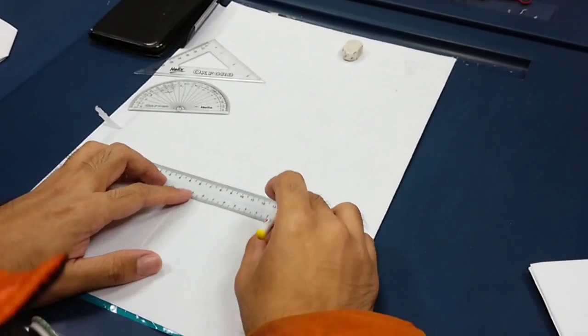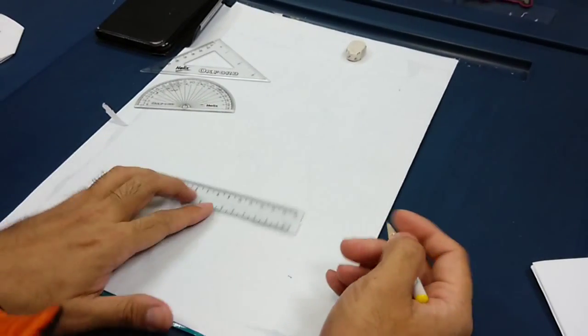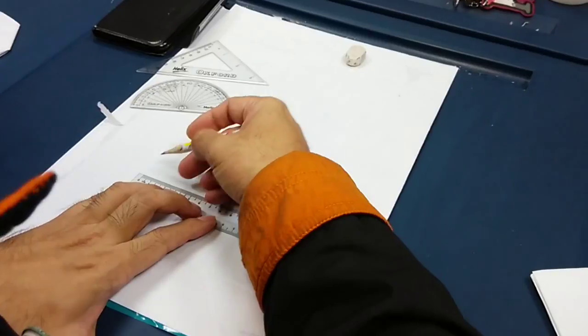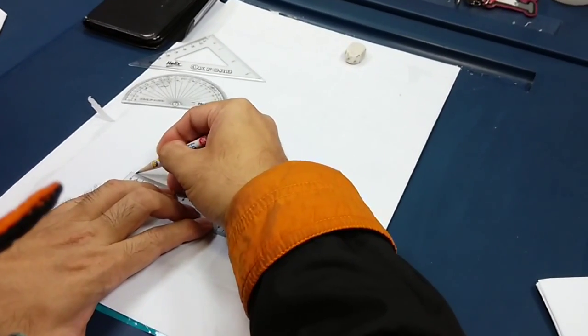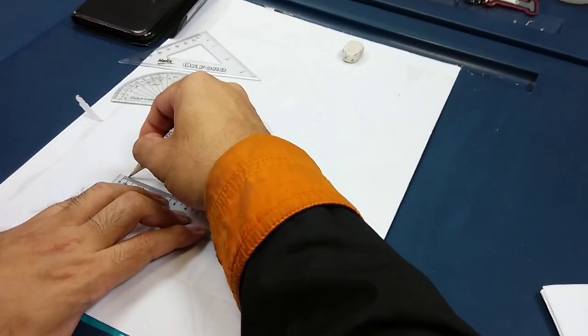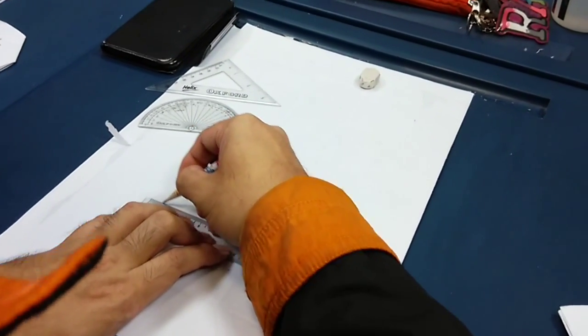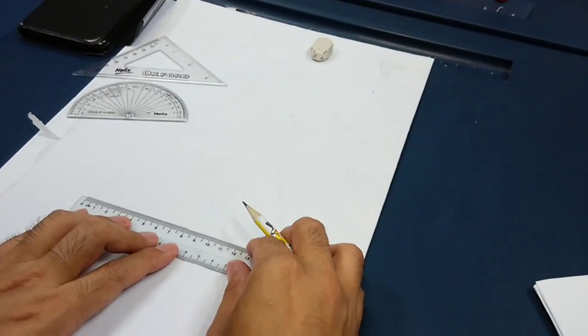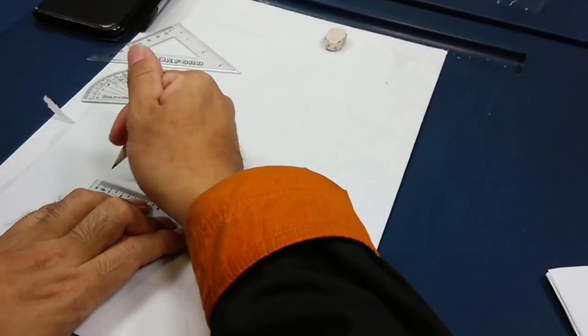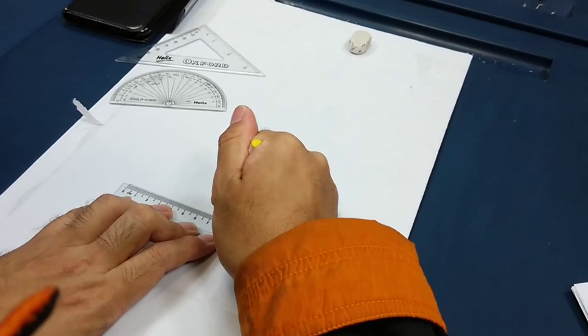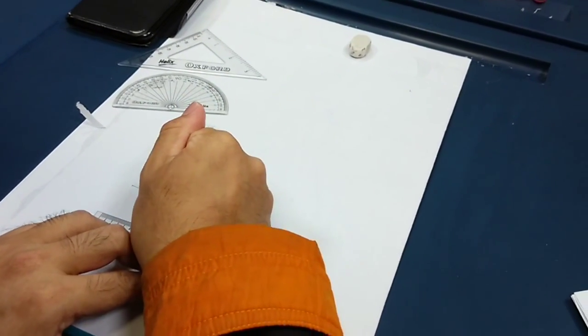Okay, wait again. Draw a straight line 8 cm long. So, draw 8 cm. I'm looking at that. Okay, this is the 8 cm right? Yes. This is the 8 cm.